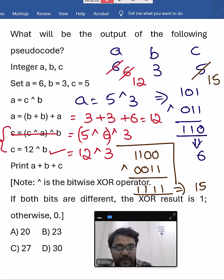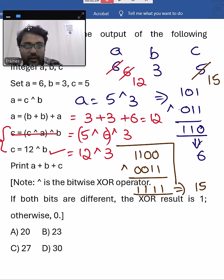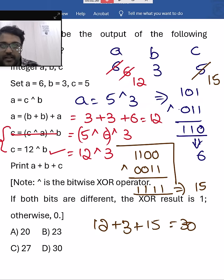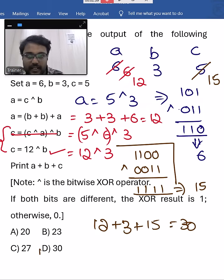Now finally, you have to print A plus B plus C. A value is 12, B is 3, C is 15. Adding, we get 30 as the answer. So option D is correct.